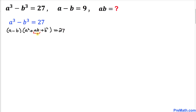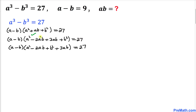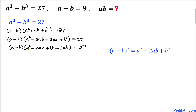Now let's focus on the ab term. I can write ab as negative 2ab plus 3ab. So on the left hand side this becomes a minus b, times a squared minus 2ab plus 3ab plus b squared equals 27. In the next step I group a squared minus 2ab plus b squared together.